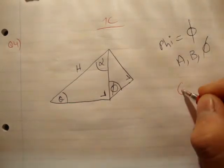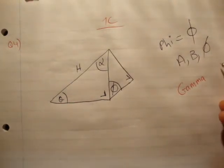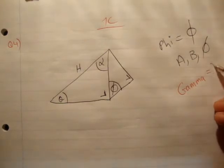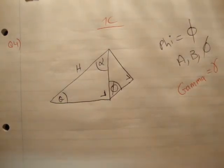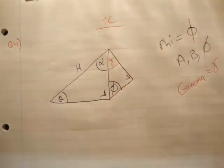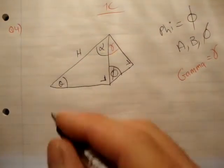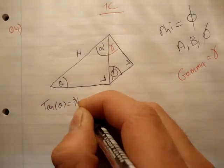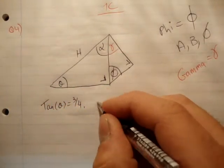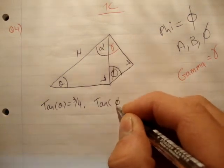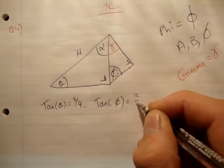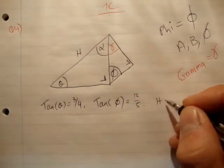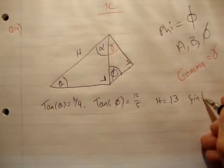We're going to do another letter, this one is gamma. That's what gamma looks like. I'm going to call that gamma. And what are you given? You're given that tan theta is equal to 3/4. You're given that tan of phi is equal to 12/5. And you're given that H is equal to 13, find x.